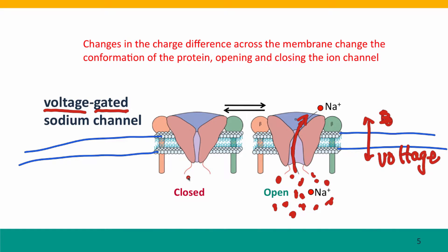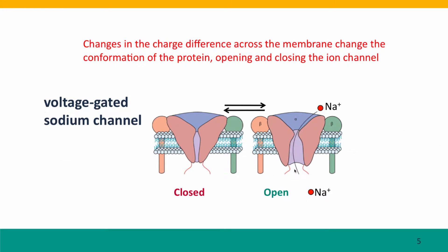Other cellular processes then regenerate the voltage across the membrane, triggering the channel to open again. This is how nerve impulses work — its regulatory effect changes the conformation of the channel that lets the ions cross the membrane.